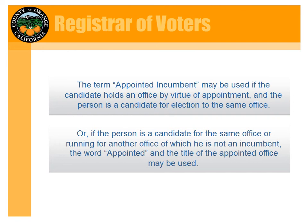Regarding 'appointed incumbent': if someone holds an office because they were appointed rather than elected by the electorate, they need to use the phrase 'appointed incumbent.' This is also true for the incumbent who wants to file for a different office — for example, if a city council person wants to run for mayor, they would need to put 'appointed city council member,' which would be an accurate depiction.